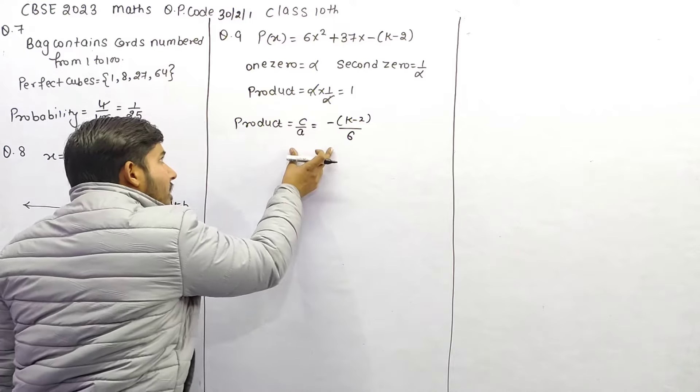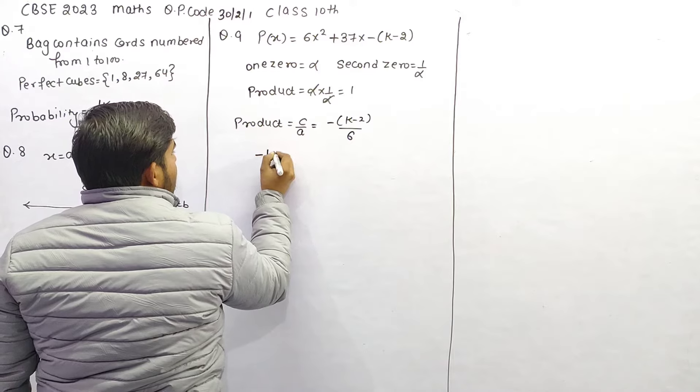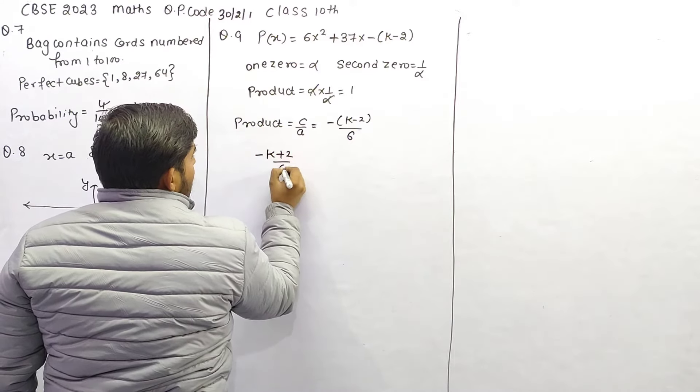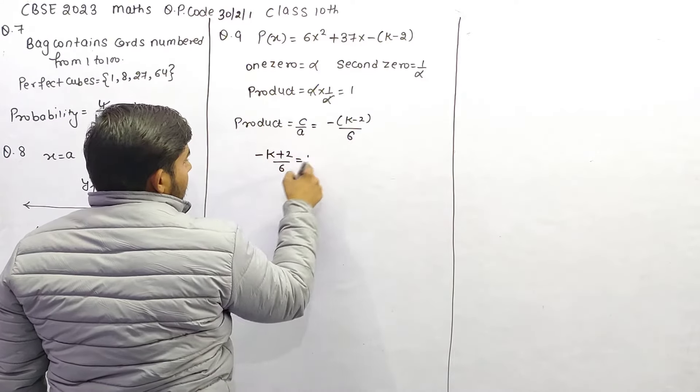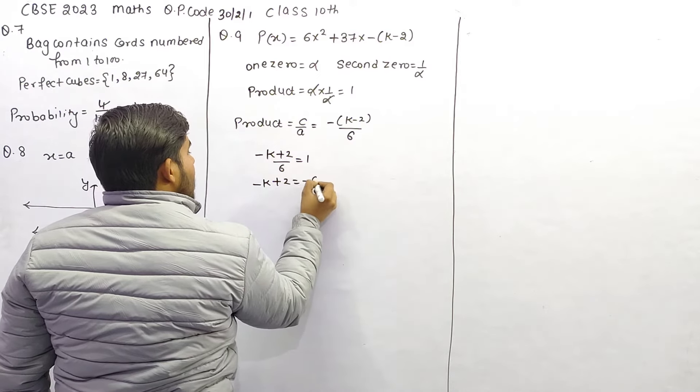ये भी product है और ये भी product है, दोनों बराबर होंगे, minus को अंदर ले जाओ, minus K plus 2 upon 6 is equal to 1, यहां ले जाएंगे, minus K plus 2 is minus 6,